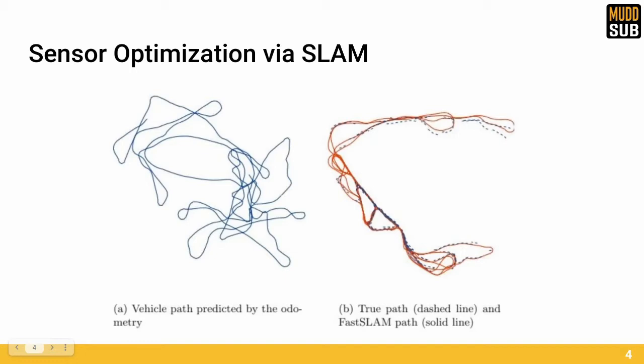However, as SLAM depends solely on measurement data and our control model, algorithms that are resistant to sensor and movement noise are required. We decided to implement the algorithm FAST SLAM 2.0.